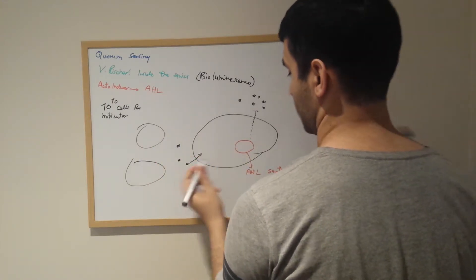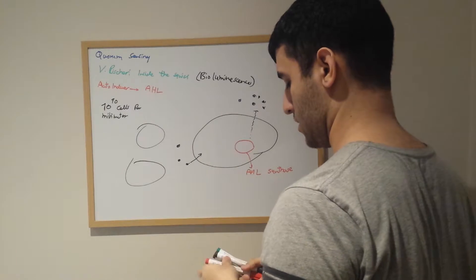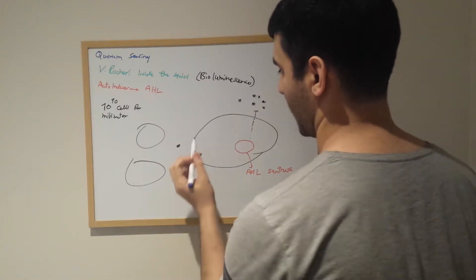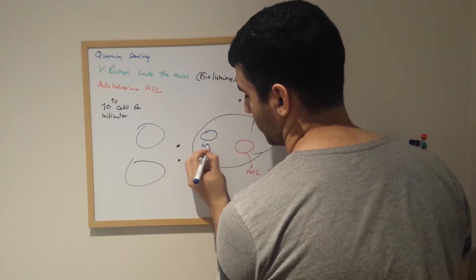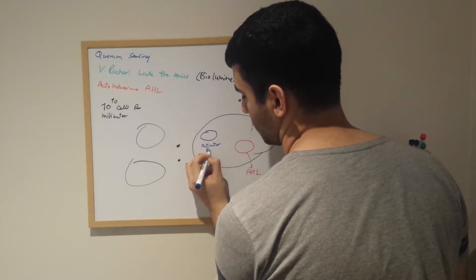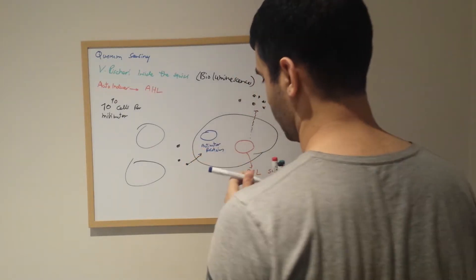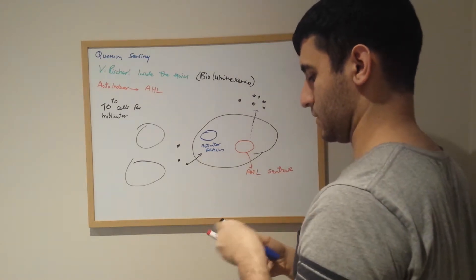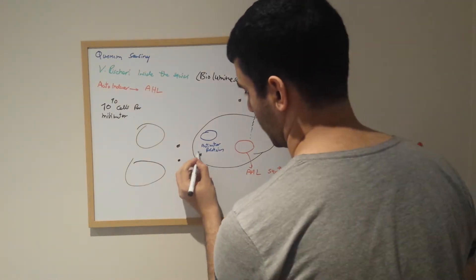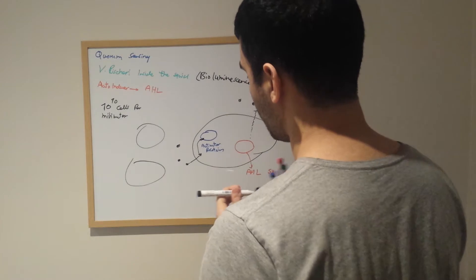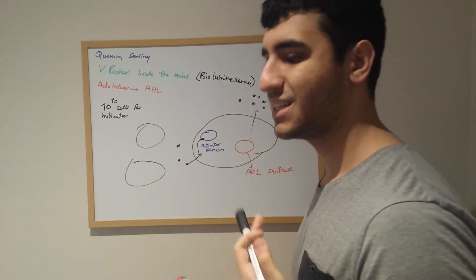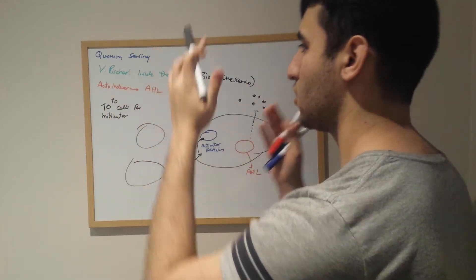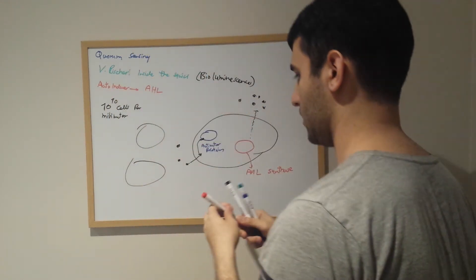They would bind something known as activator protein. They would bind to this activator protein, and upon binding with this activator protein, they would activate a specific quorum sensing gene.